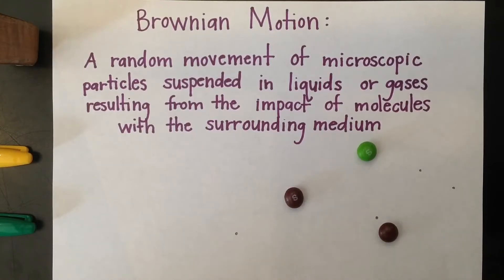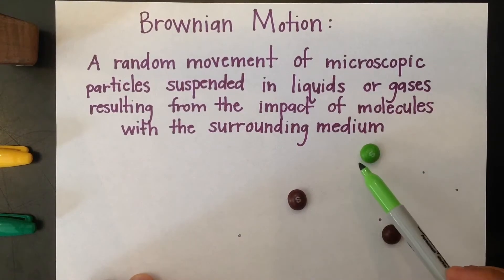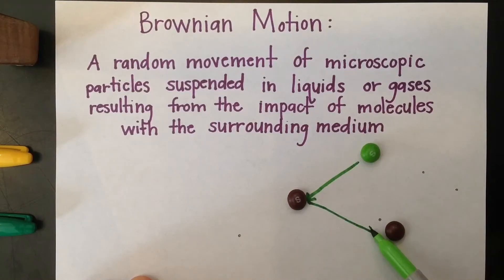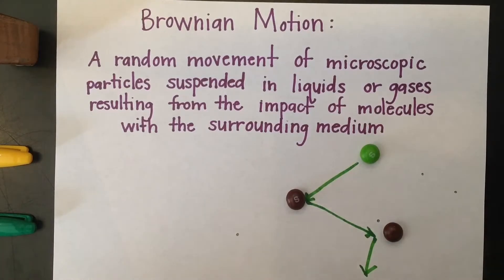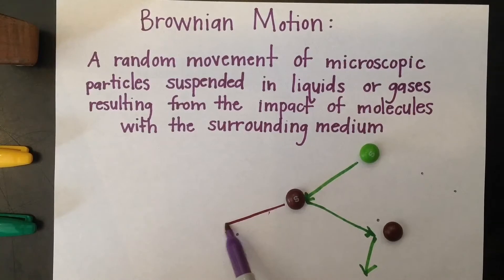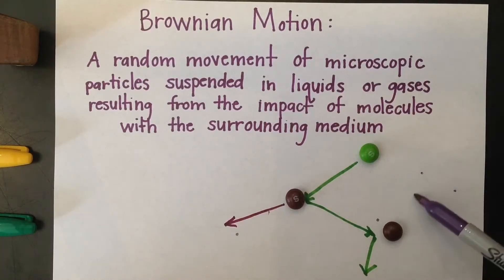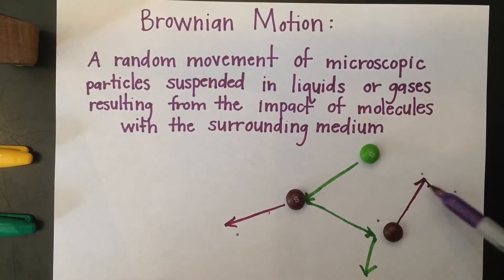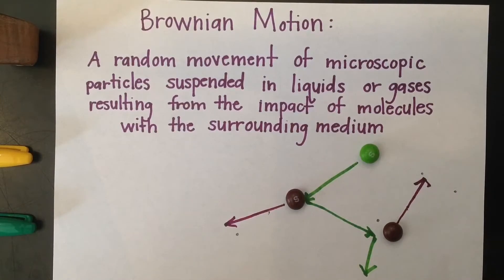So essentially, Brownian motion is any motion resulting from impact with other particles. If we had this green Skittle as a particle in water collide with this purple Skittle and then bounce off and collide with this purple Skittle and then bounce off that way, the purple Skittles would react by colliding this way and this way. So the movement of the purple Skittles is Brownian motion, because it's movement caused by the impact of another particle.